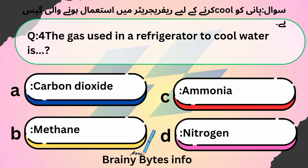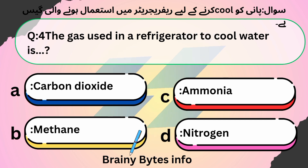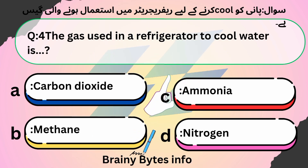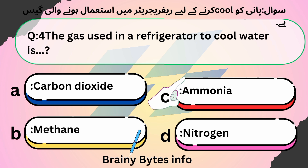The gas used in a refrigerator to cool water: A. Carbon Dioxide, B. Methane, C. Ammonia, D. Nitrogen. Answer: C. Ammonia.